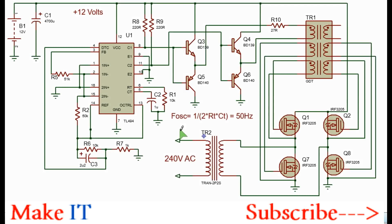Hi, welcome to Make It. I'll share with you a simple idea you can apply to make a full bridge 1000 watt inverter. The heart of the circuit is this TL494 IC. You also need a couple of transistors and MOSFETs.